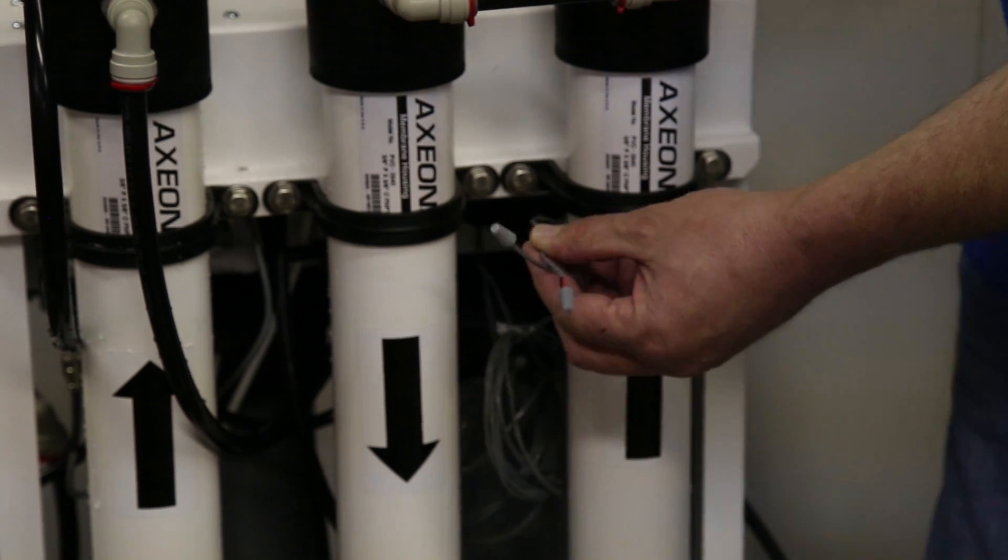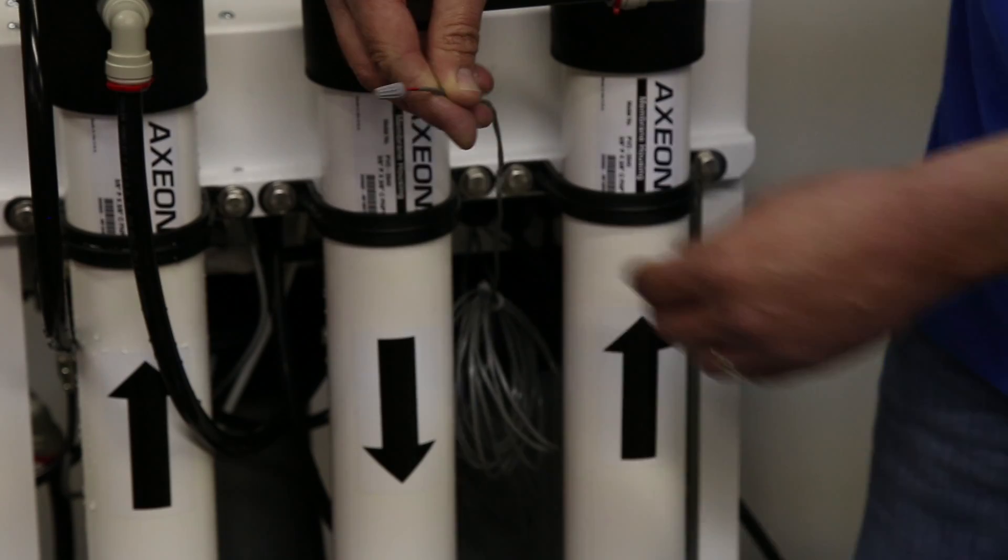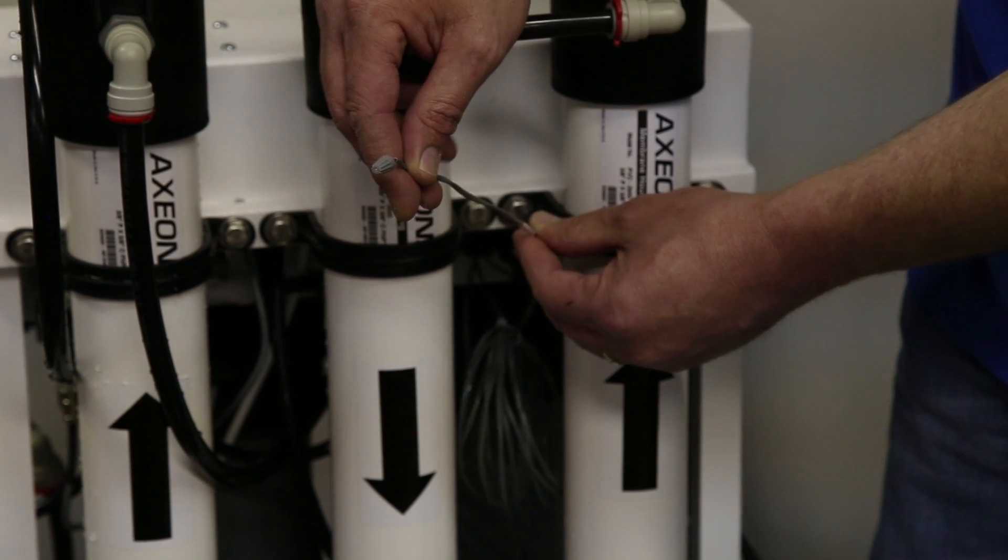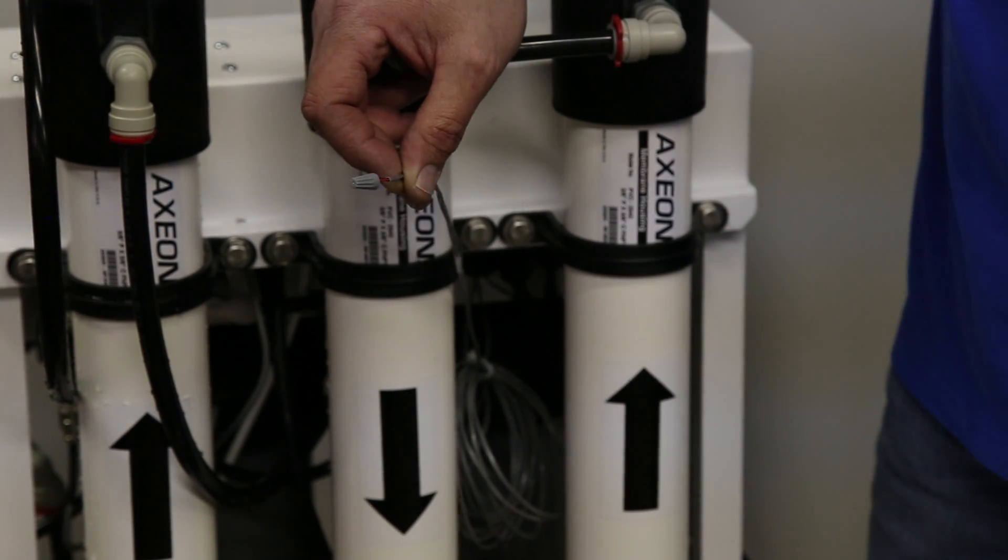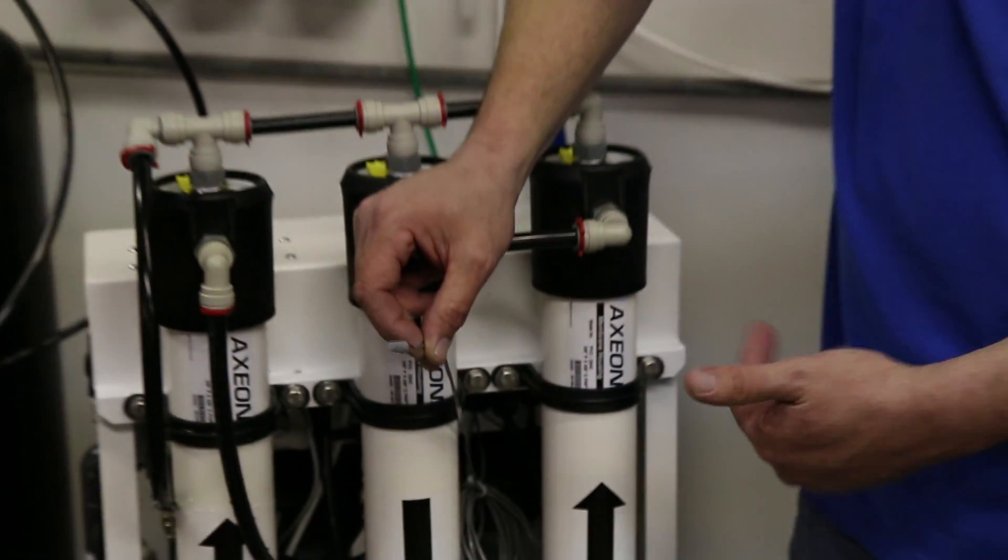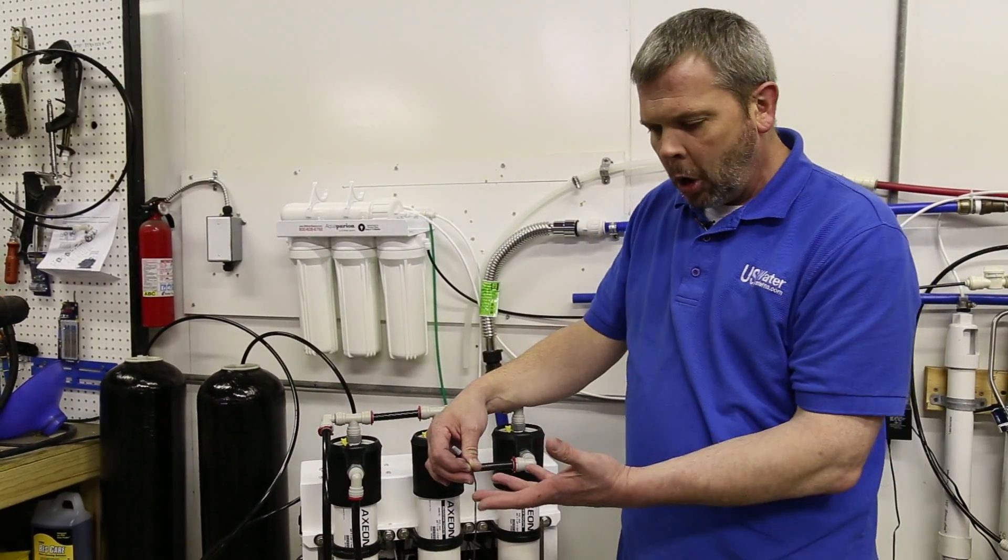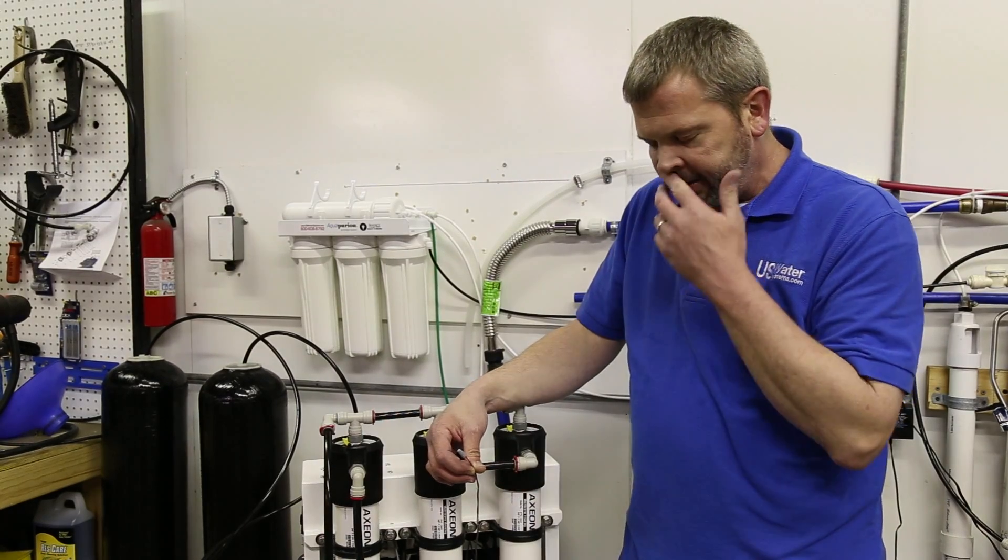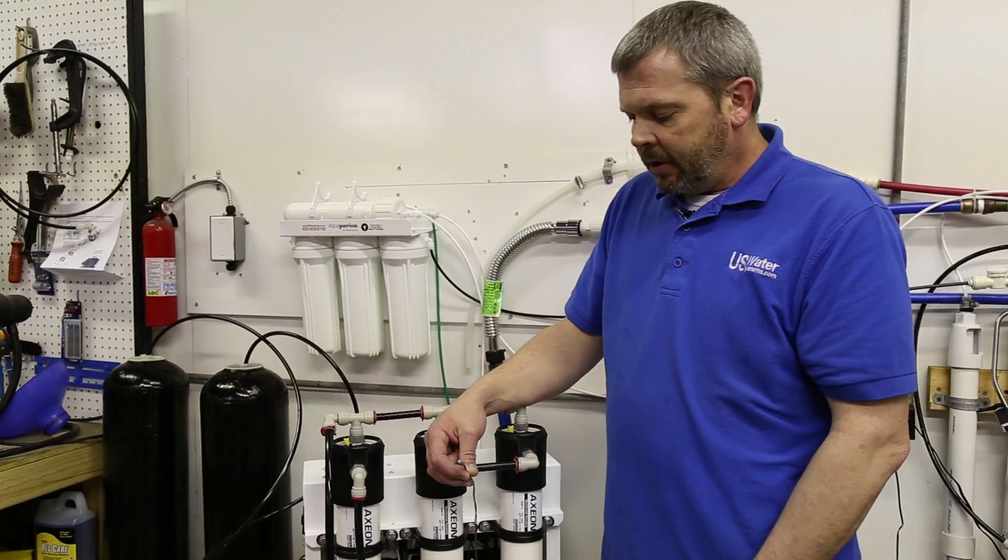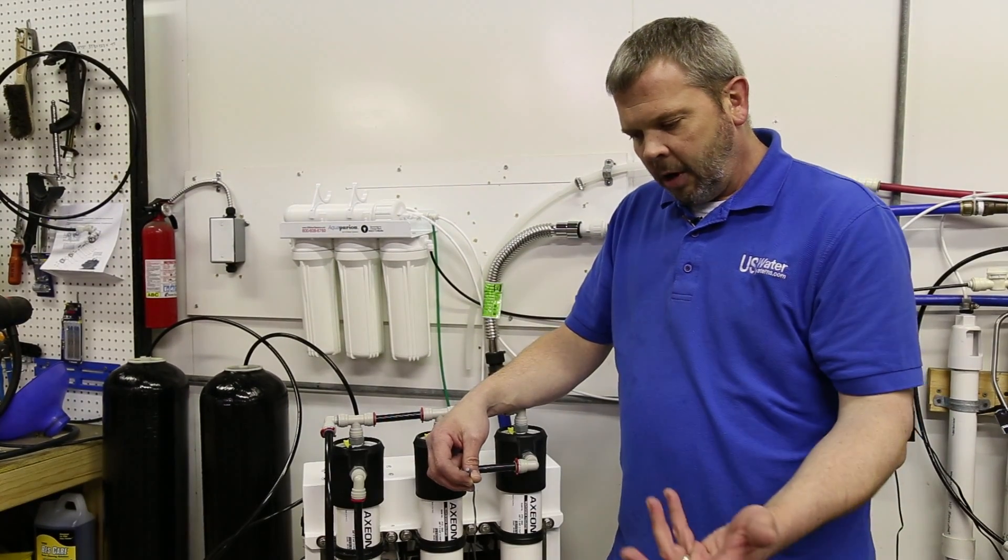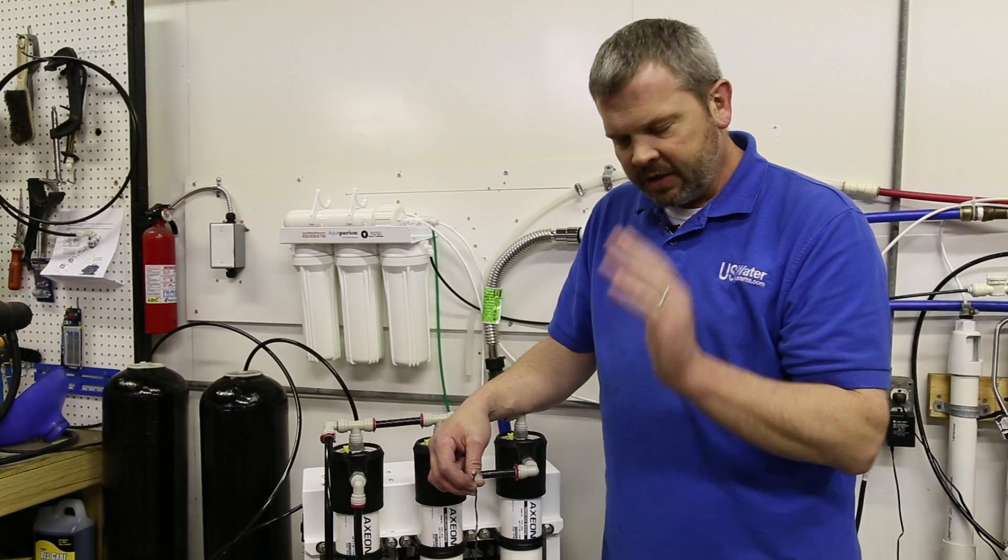The one for the tank full would be the one that you would run to a float switch in the tank. What that basically would do is it could be any kind of switch, any kind of wire size because again there's no voltage or amperage here. When this particular circuit is open and the wires aren't touching, then the system will not run. So you would want a switch that would open basically when the float comes all the way up and the tank is full.